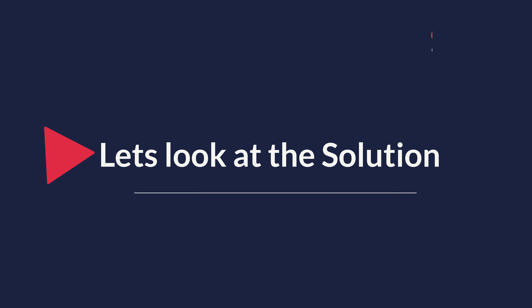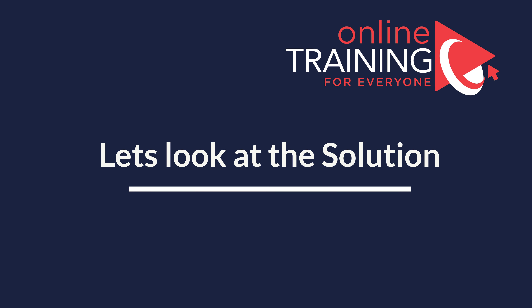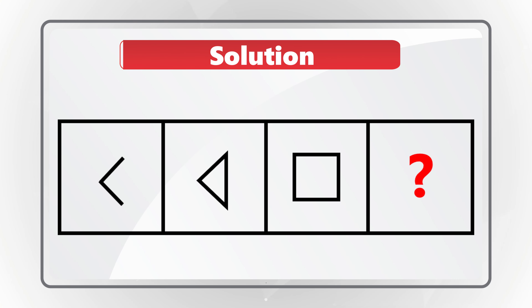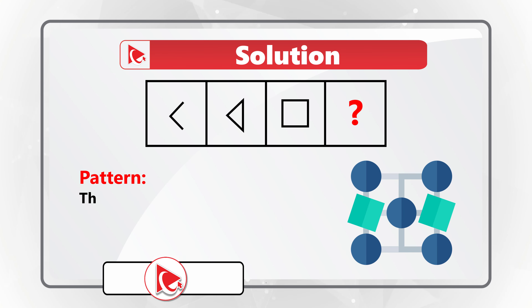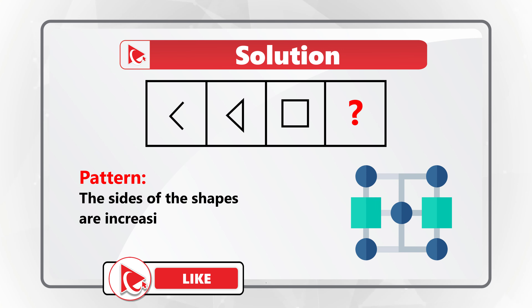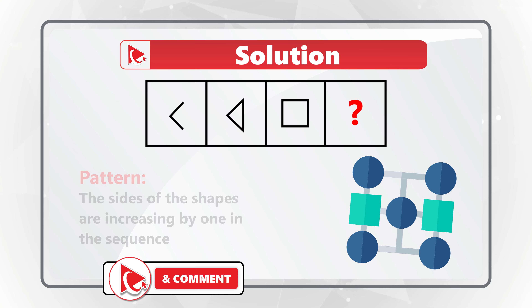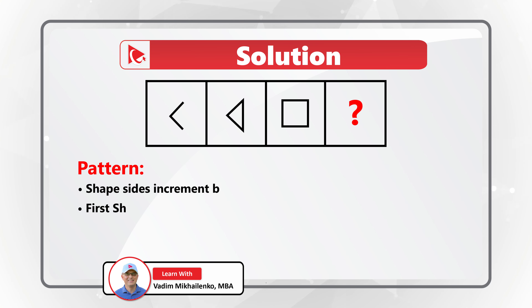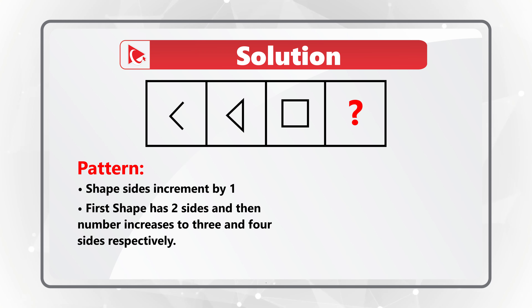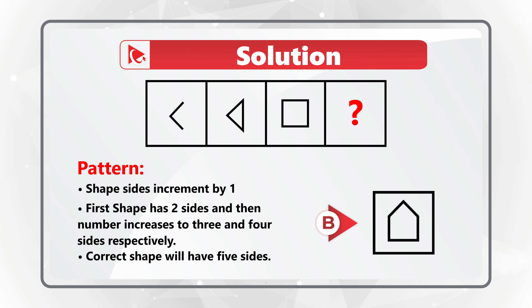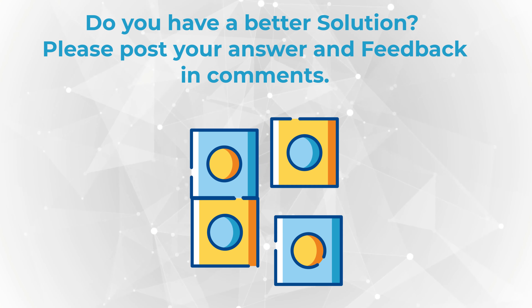I am moving forward to reveal my version of the solution. The key to solve these types of challenges is to find the pattern. The pattern here is that the sides of the shape increase by one in each sequence — the first shape has two sides, then three, then four. This means the missing shape should have five sides, and only shape B has five sides.